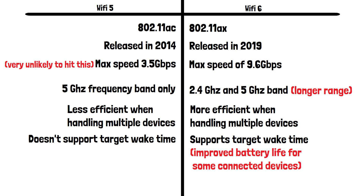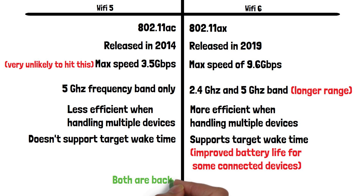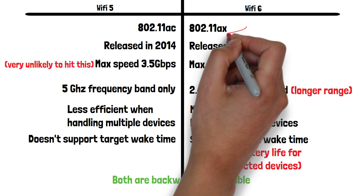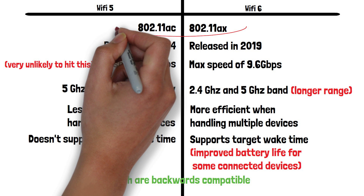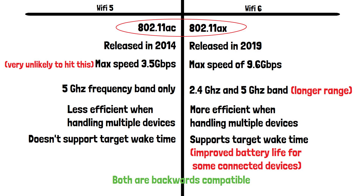Both Wi-Fi 5 and 6 are backwards compatible with older devices. If you want to check which generation of Wi-Fi your device or router supports, go to the manufacturer's website and look at the tech specs. This will list which standard it uses. Remember it may be referred to by its 802.11 version rather than saying whether it's 5th or 6th generation.